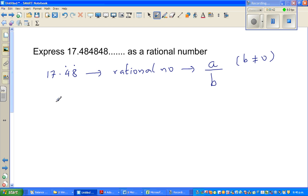So I'm going to write this as X is 17.4848 goes on to infinity. So this is recurring. So what I'm going to do is I'm going to multiply both by 100. So this becomes 100X. So if you multiply this by 100, you have to multiply this by 100. So the decimal point will move two places to the right or the number will move two places to the left, whichever way you understand.